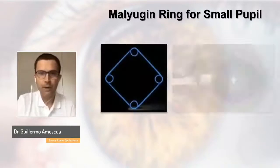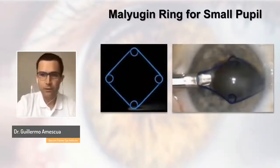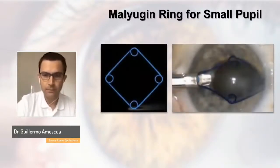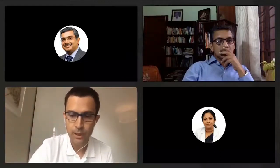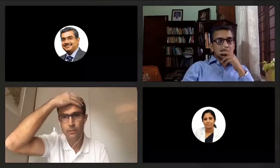I'm also a big fan of the Malyugan ring — I have no financial interest, though I joke with Dr. Malyugan that doing so many uveitis cataracts probably paid for his new car. There's also the I-ring, available in the United States for the past two to three years, which is very similar to the Malyugan ring. Both are effective and I have no preference between them.